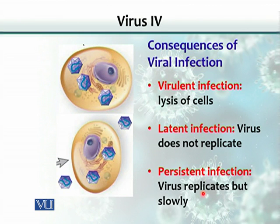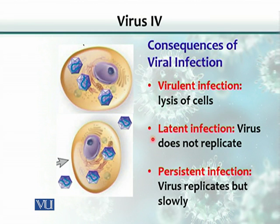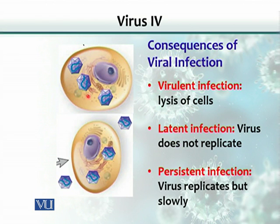If you look further at these cytopathic effects — if the virus is very virulent, meaning very pathogenic, it will lyse and eliminate the cell. CPE can also be manifested as a latent infection. In a latent infection, the virus remains in the cell but does not replicate. It just stays there and waits until there is immunosuppression or the right conditions are created for it to replicate. The cell is infected, but the virus does not replicate.